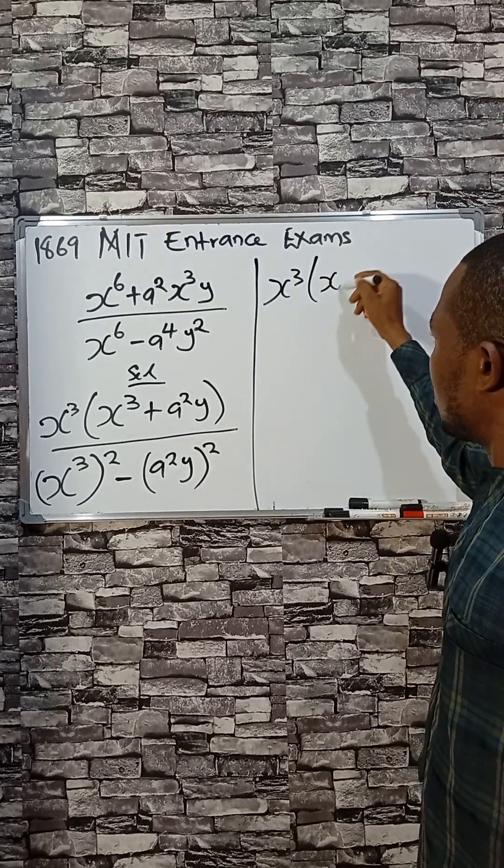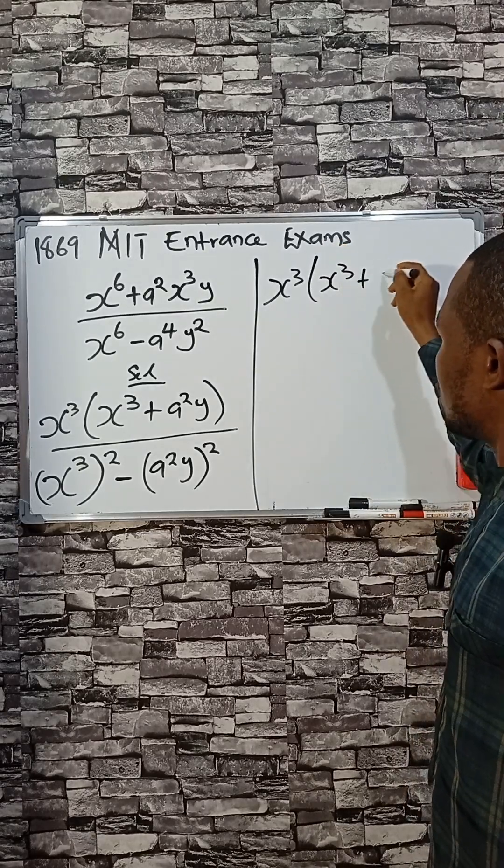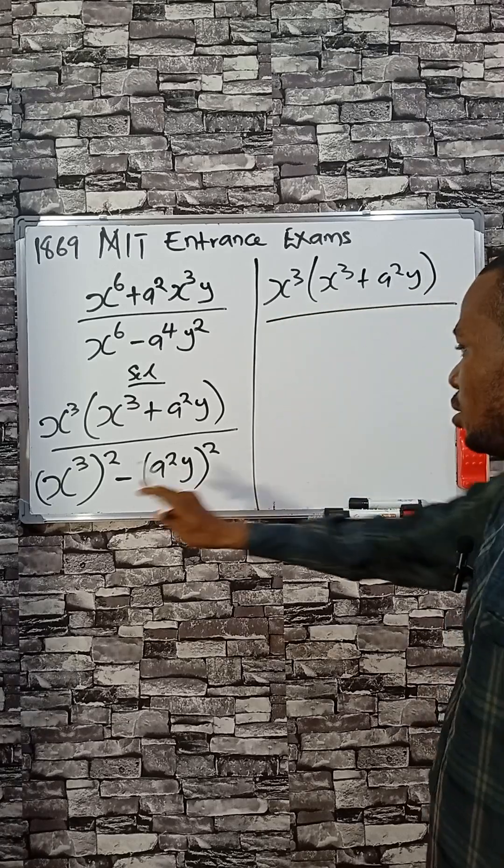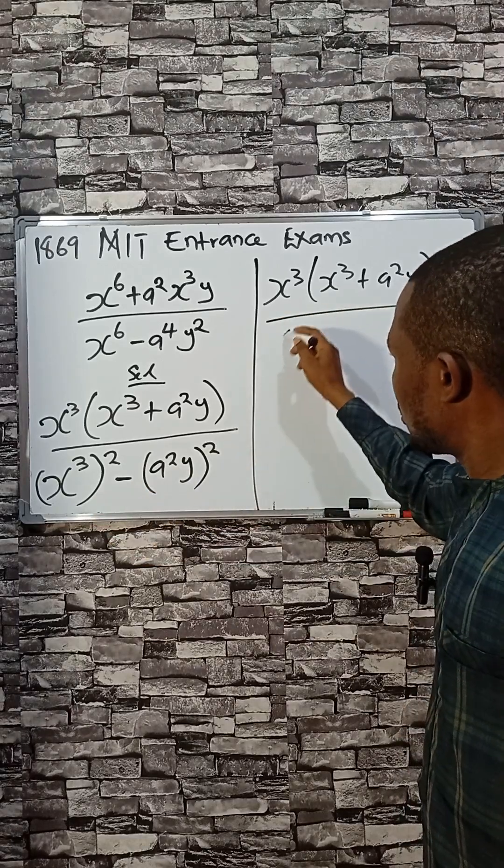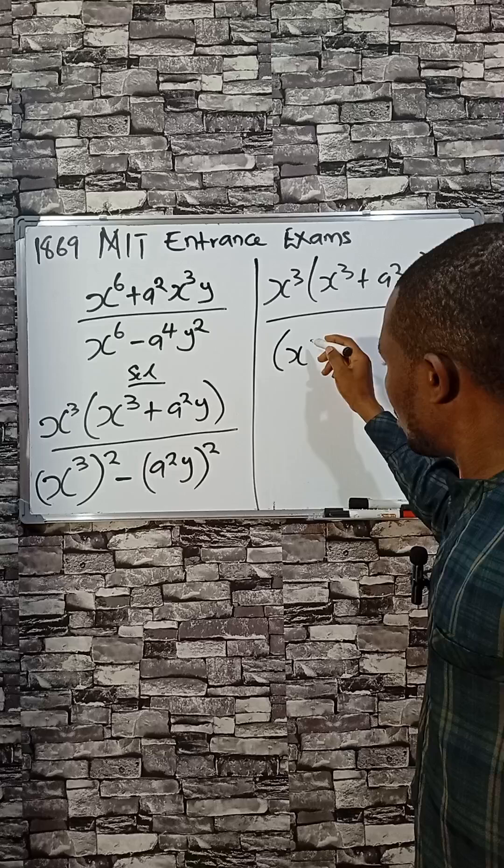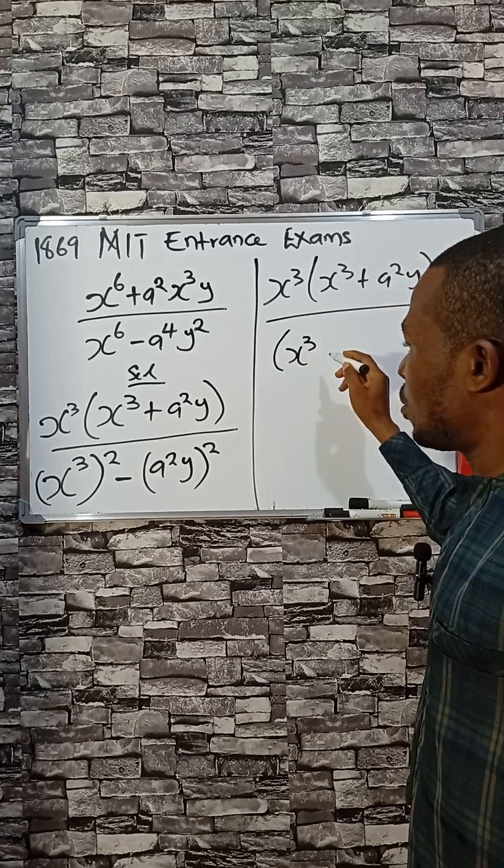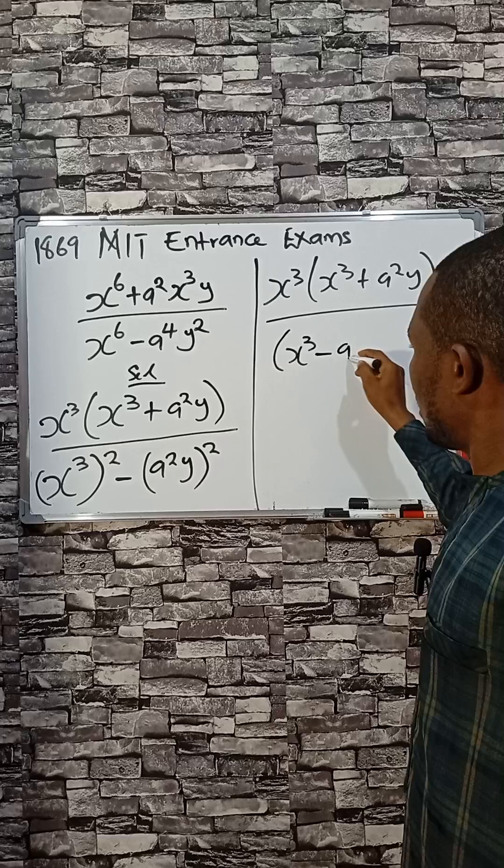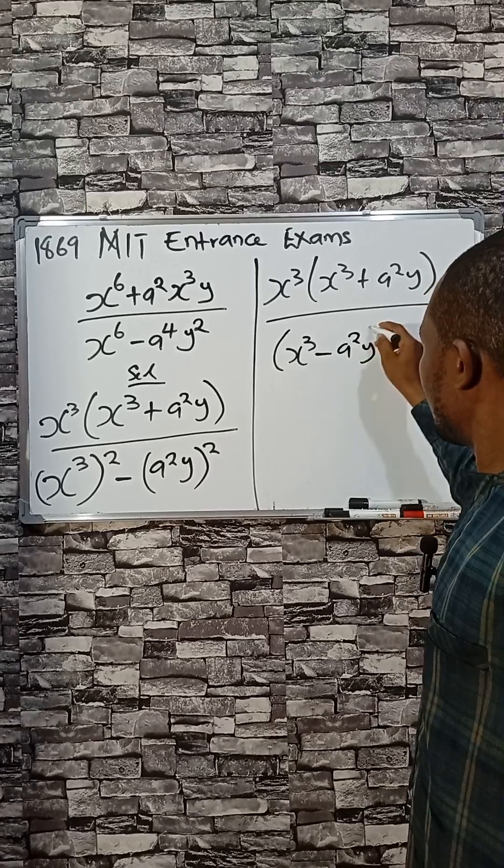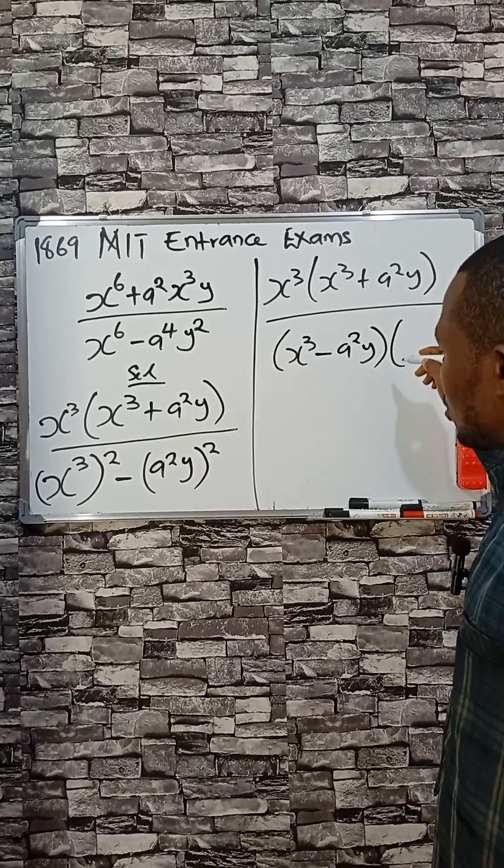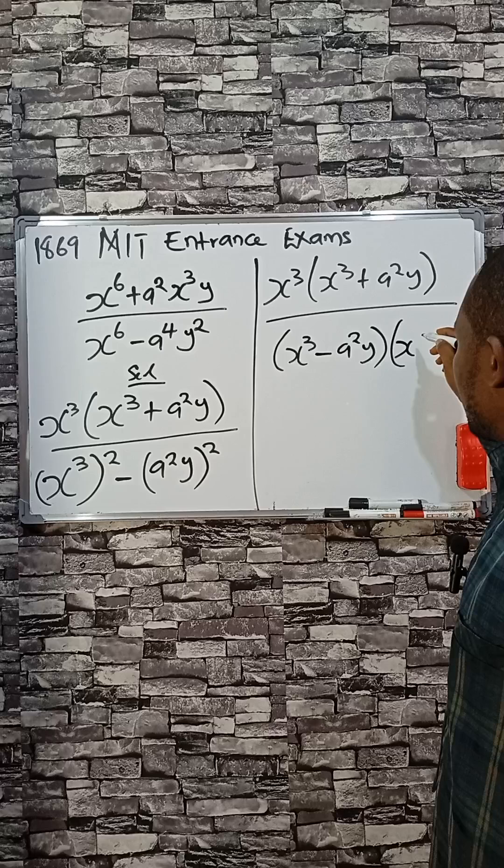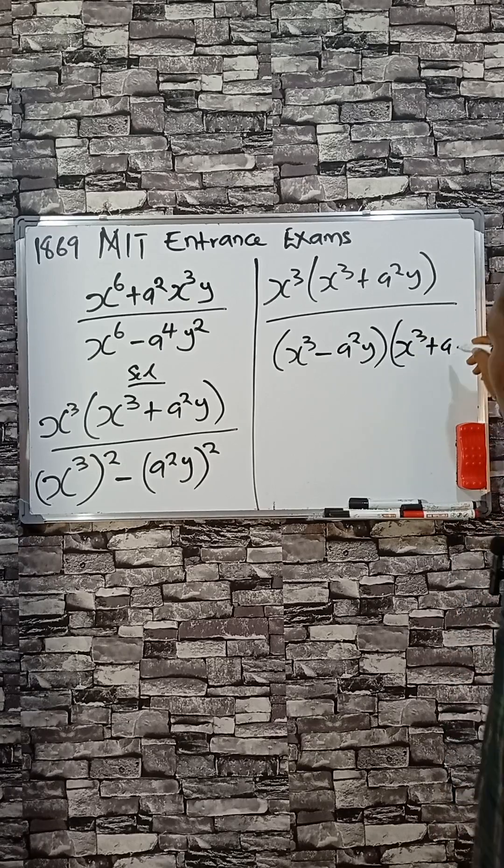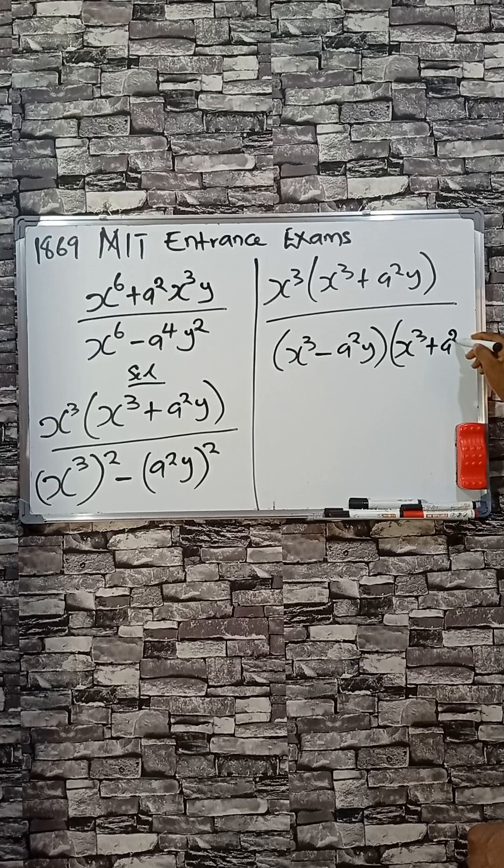Then x cube here plus a squared y, divided by this. So x cube minus a squared y - first bracket. Second one, we have x cube plus a squared y.